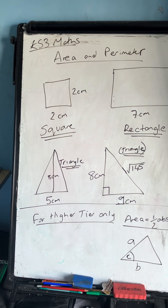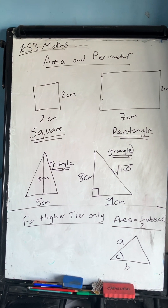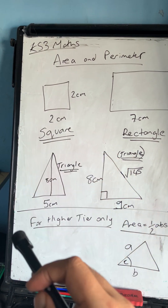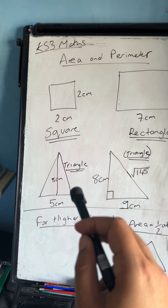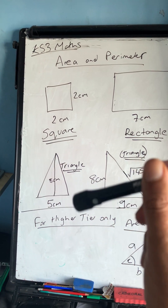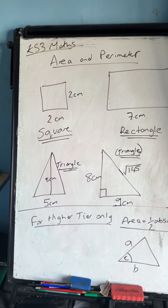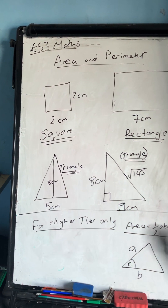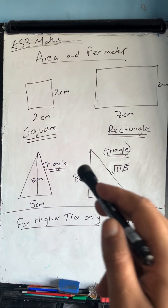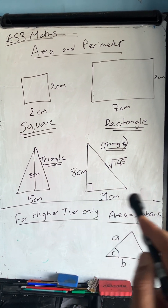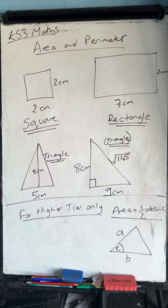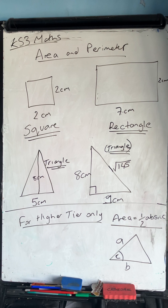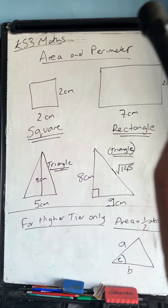Looking at a triangle now: the perimeter is again the distance around the shape, so you'd add up all three sides. For this right-angled triangle, given the two shorter sides, the perimeter would be 8 plus 9 plus the square root of 145.